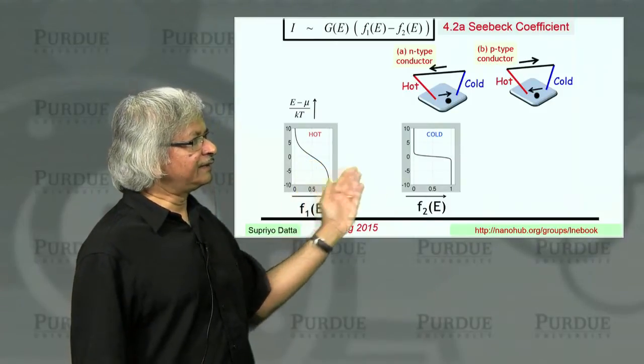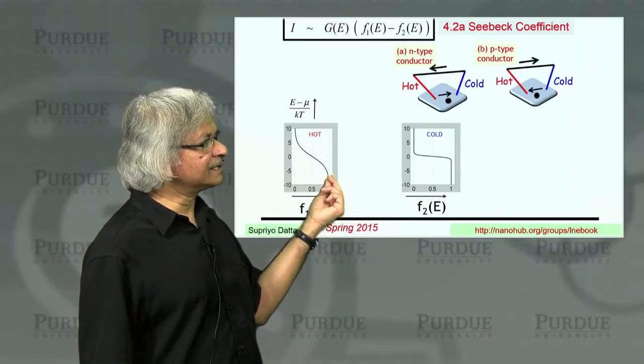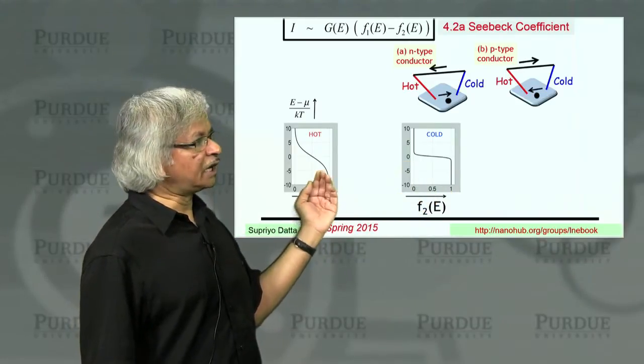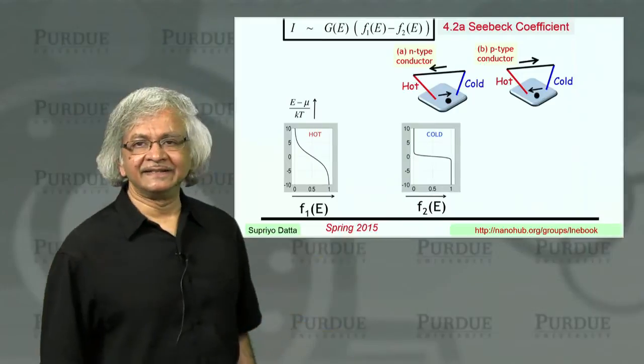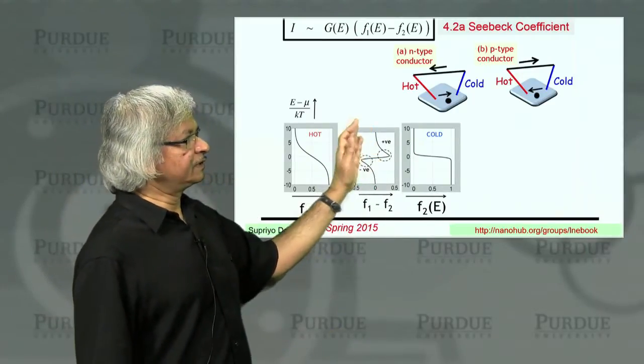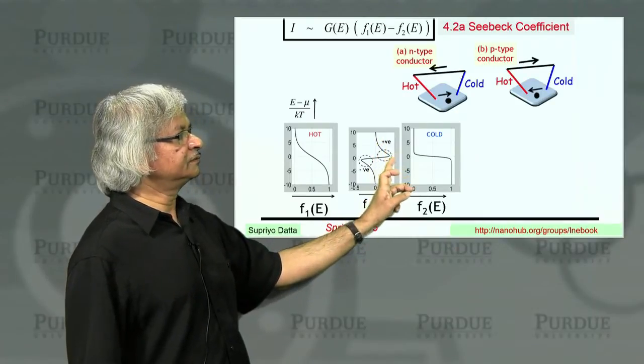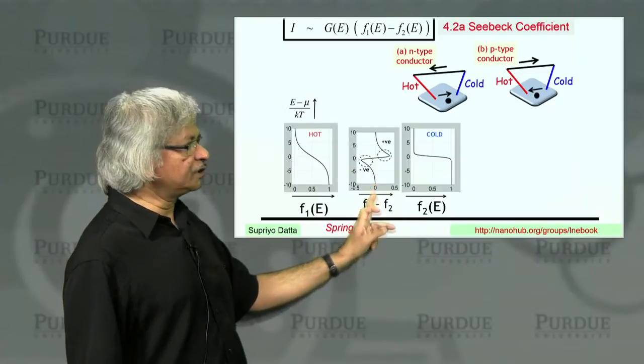Whereas if you look below the chemical potential on the negative side, that's where you see this one is 1, the cold side, but the hot side is a little less than 1. So now, F1 minus F2 is negative. So when you plot it, it will look something like this. This is 0. Above mu, it's positive. Below mu, it's negative.